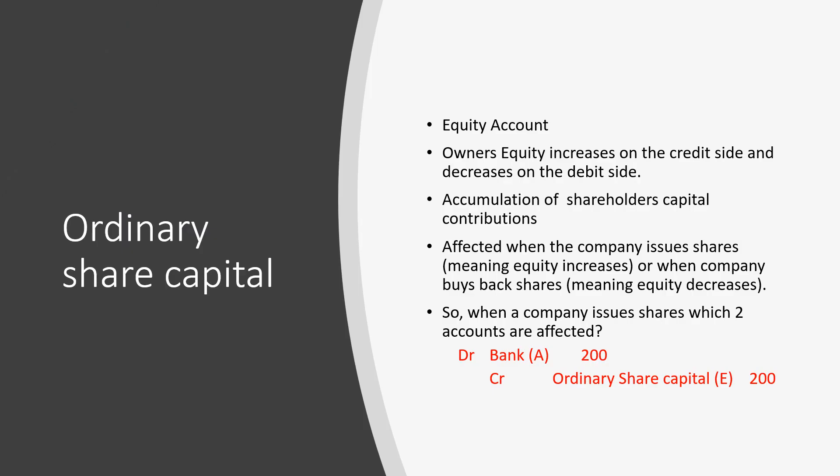The ordinary share capital account is an equity account. An equity account increases on the credit side and decreases on the debit side. The account represents an accumulation of capital contributions by shareholders, done through buying of shares in the company. When shareholders buy shares, their equity in the company increases. When the company buys back shares from shareholders, their equity decreases. When the company issues shares, the two accounts affected are bank and ordinary share capital. Bank is an asset, and because shareholders pay cash to the company, the company's bank increases — thus bank is debited. Ordinary share capital is credited when the company issues shares.